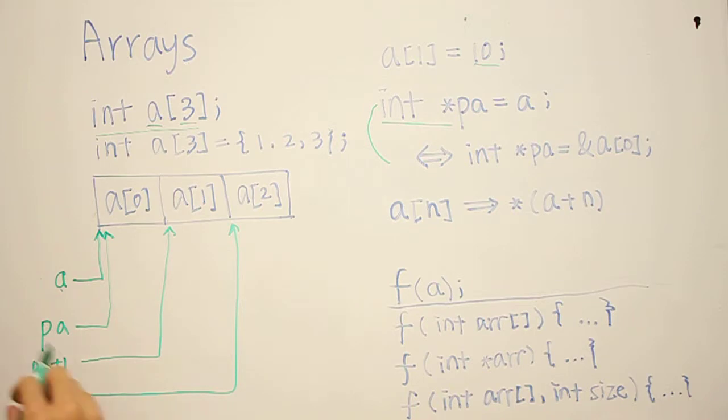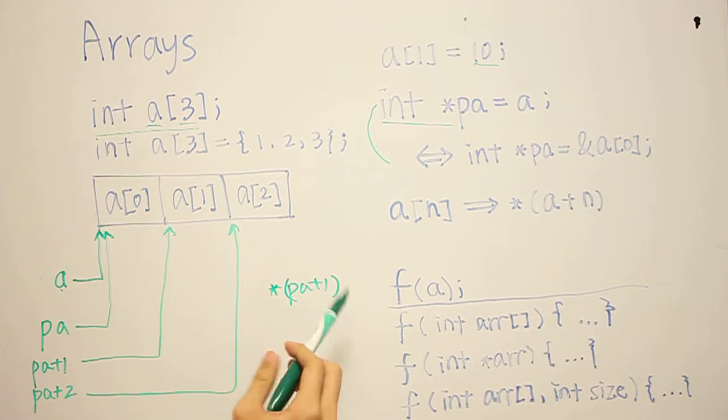So when we dereference one of these, like let's say we have PA plus 1 and then we try to dereference it, then it's obvious that we will get the second element, which is A bracket 1, right?